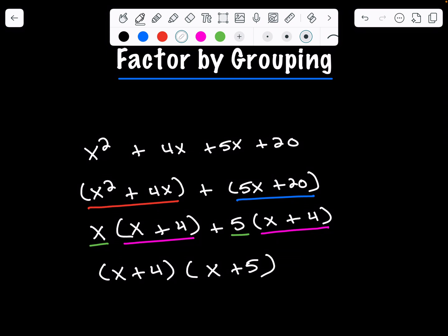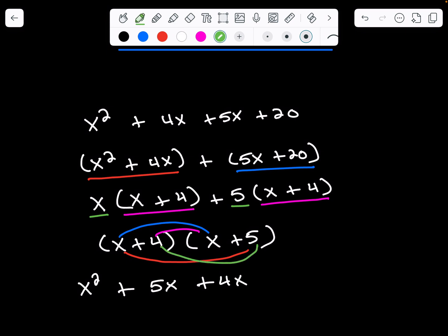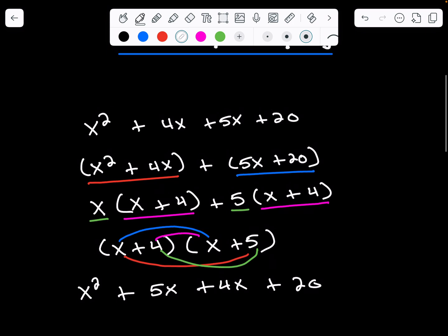As usual, we want to make sure that we've done this right. So let's go ahead and FOIL this out. We're going to do our first terms, which is x². We're going to do our outside terms, which is +5x. We're going to do our inner terms, which is +4x. And we're going to do our last, which is 20. Now, if you look at this expression, this expression and this one are exactly the same. So we know we've done this correct, factored by grouping.